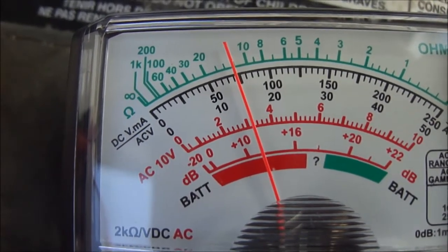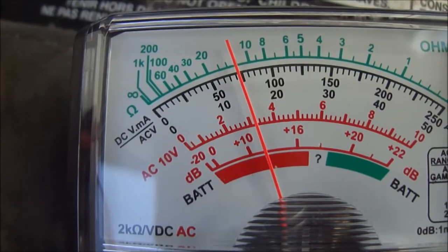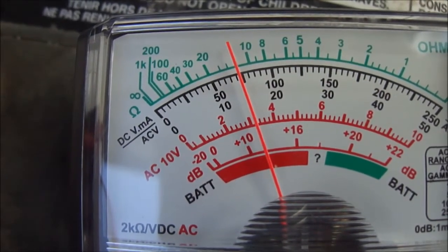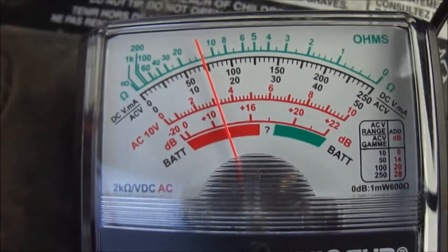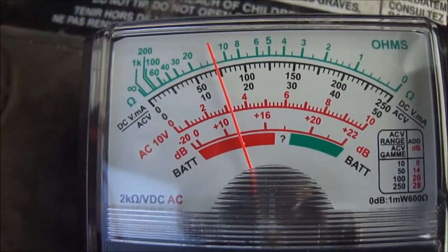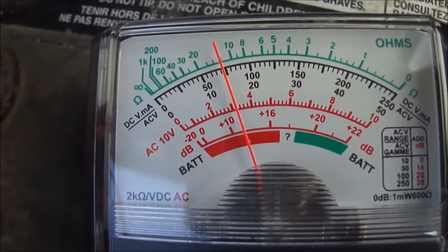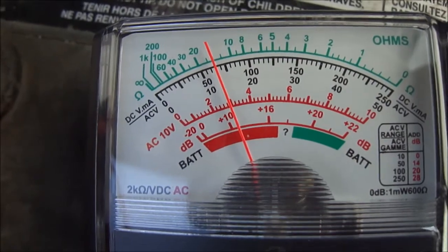There, it's charging at 14.5, somewhere in there. This meter might not be that accurate, but you can see it. Okay, shut it off. And that's how you tell if the alternator is charging or not. That's it.